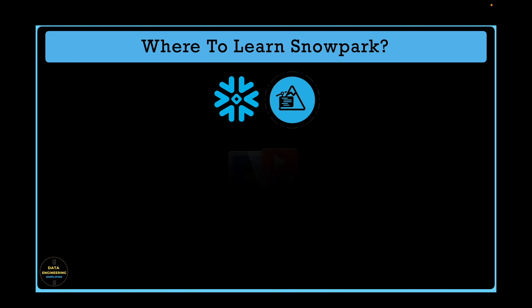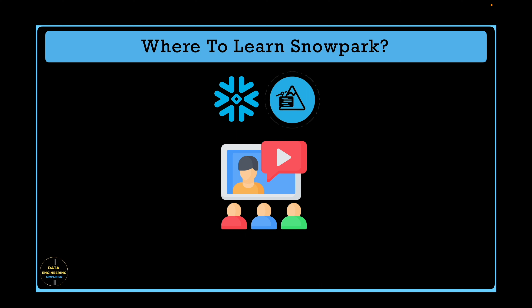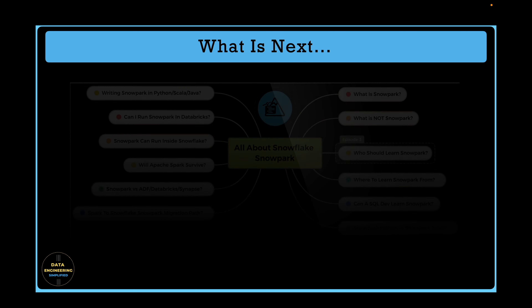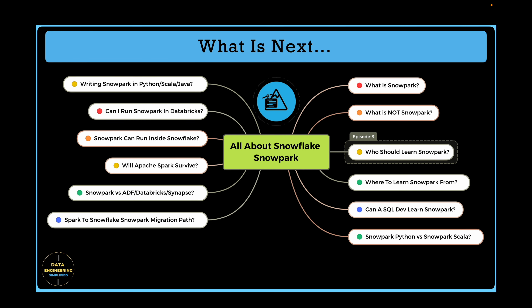Now we know the different proficiency levels and what we should learn under each one as per our current role. The next question is where to learn from, and how to learn fast using appropriate examples and use cases to become more proficient — and that's what we are going to discuss in our next chapter. I assume this chapter, chapter 3, has given a fairly good overview around proficiency levels in the context of Snowpark technology with respect to your current role as well as your future role. Thanks for watching episode 3. If you have learned something valuable, don't forget to press the like button and share with other data engineers and Snowflake developers. Happy learning and keep growing!